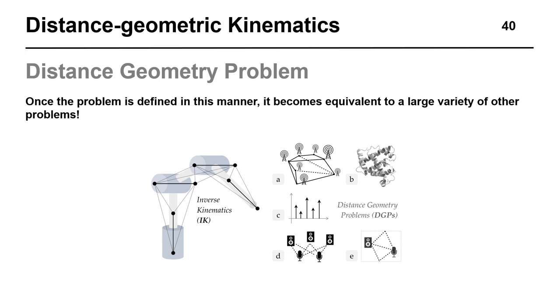Finally, it's important to note that this formulation makes the inverse kinematics problem equivalent to other so-called distance geometry problems, such as molecular conformation or sensor network localization. These areas have highly developed solution methods that may prove effective for solving robot kinematics or similar problems in the future.